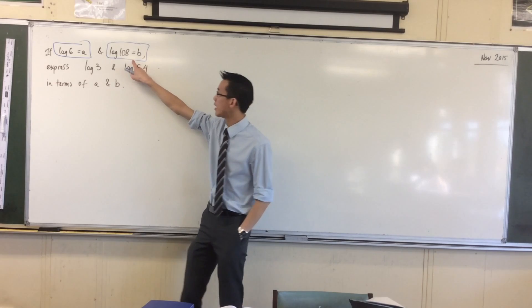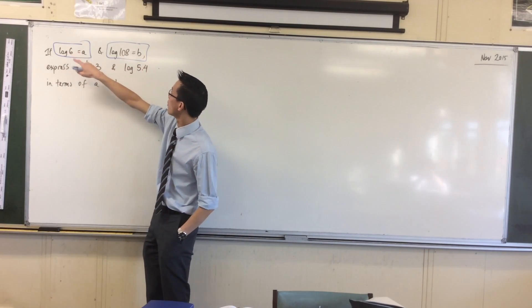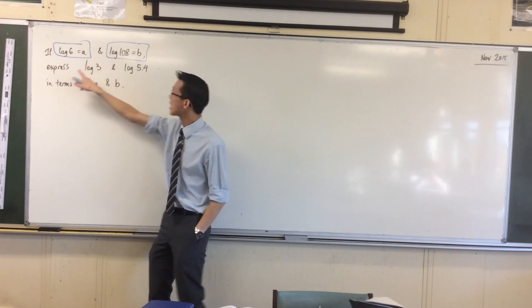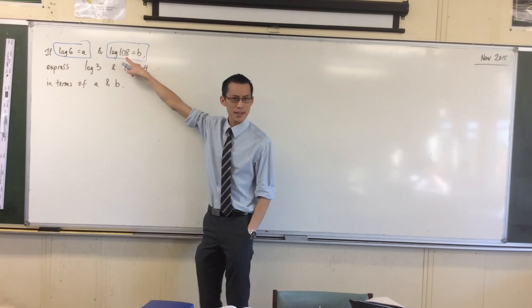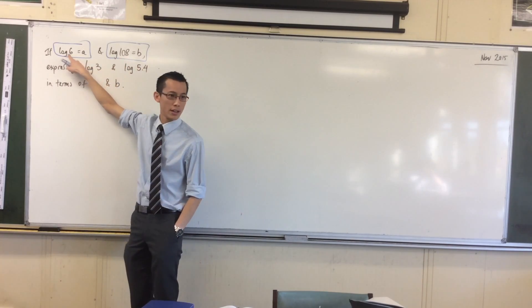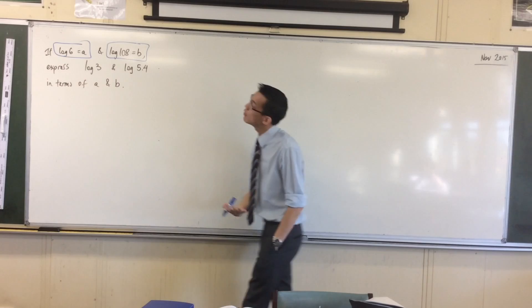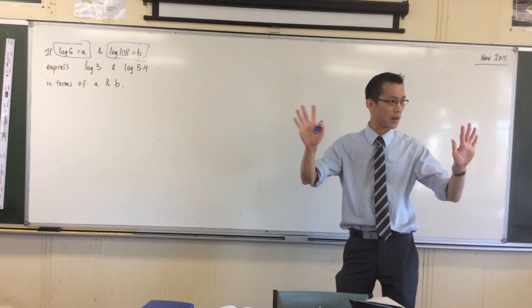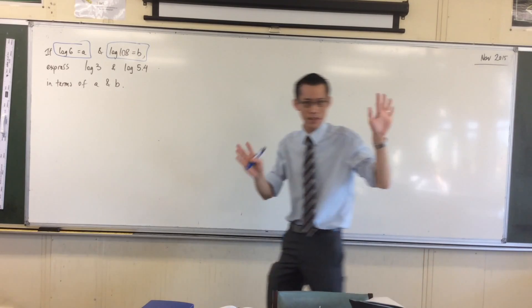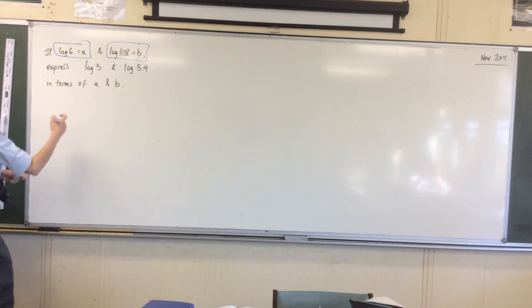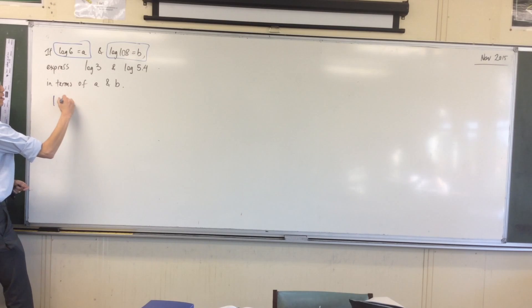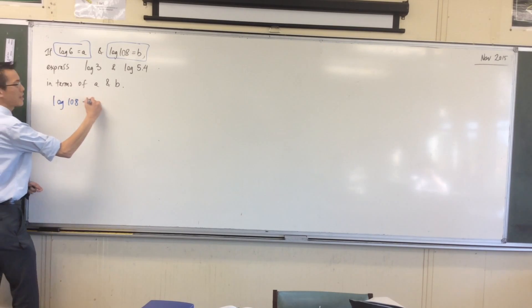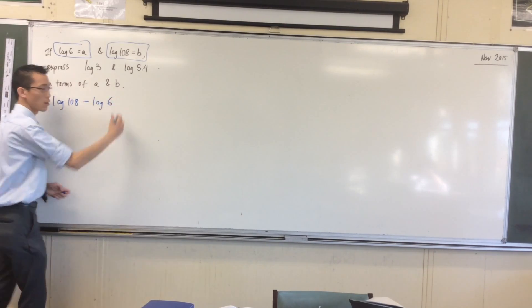You see how this number here is going to be bigger than this number over here? This is like how long do I take to grow to this versus how long do I take to grow to this. So therefore, it stands to reason something I could do is have a big number and take away a small number. Do you think that's reasonable? Big number, take away small number. So I could write something like this: log 108 take away log 6.